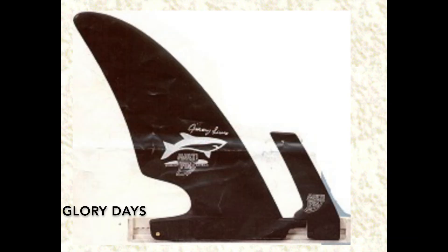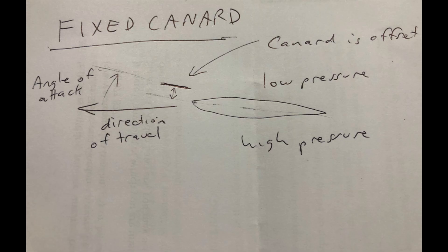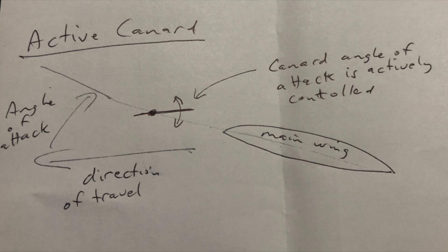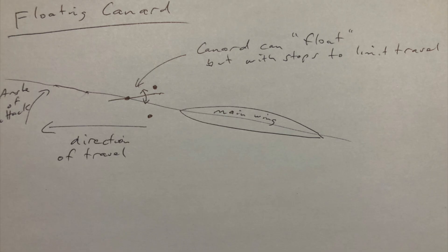A fixed canard like many from the glorying days of windsurfing needs to be offset to the low pressure side of the main wing which is difficult to implement for a windsurf fin. Many jet fighters use active canards which their angle of attack is controlled by computers which is too much for a windsurf application.